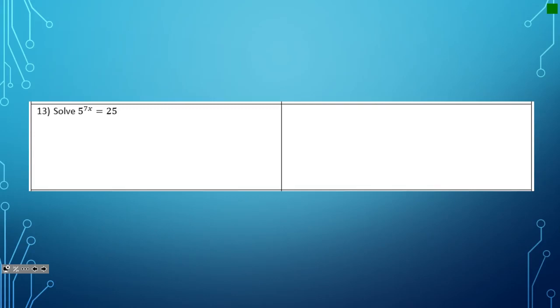This is another one where we have two options. So option one, I would need the same base. So this would be 5 to the 7x, and then 25 is the same as 5 squared.